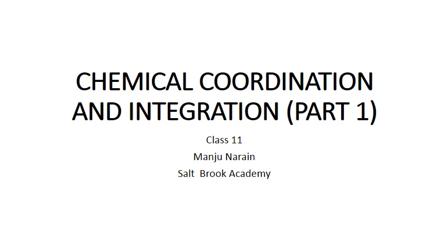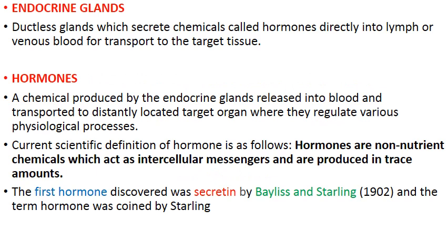Today we are going to start a new chapter: chemical coordination and integration. Before this, you have another chapter on the nervous system, which is also involved in coordination among organs. In the nervous system, coordination is very fast but short-lived, whereas the endocrine system provides chemical integration through hormones. Both the nervous system and endocrine system together regulate and coordinate various physiological activities and functions in our body.